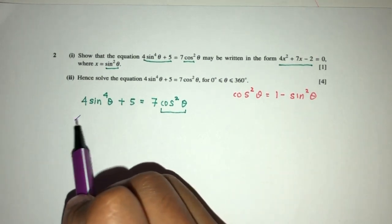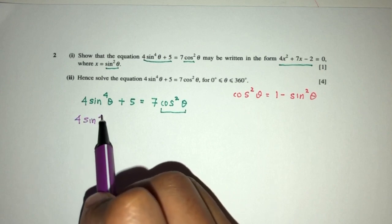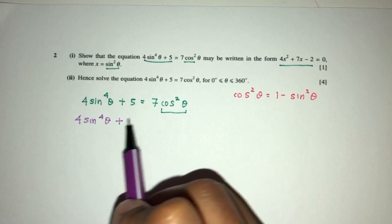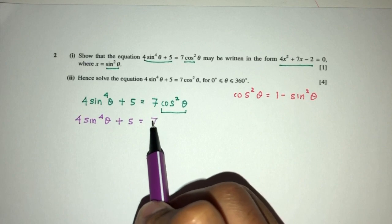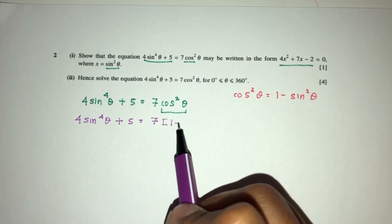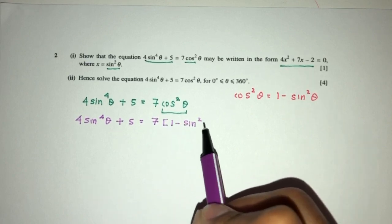Now replace you will have what? 4sin⁴θ + 5 = 7 and here will be 1 - sin²θ.